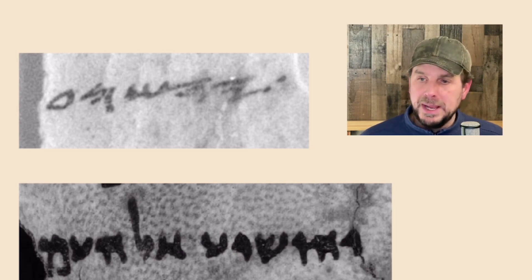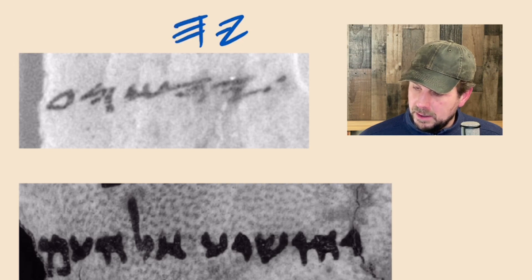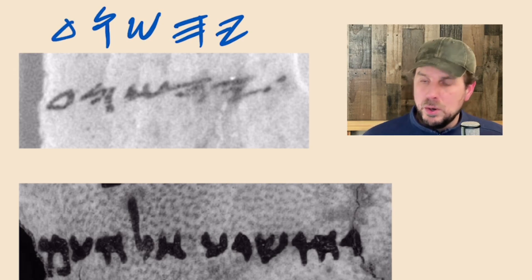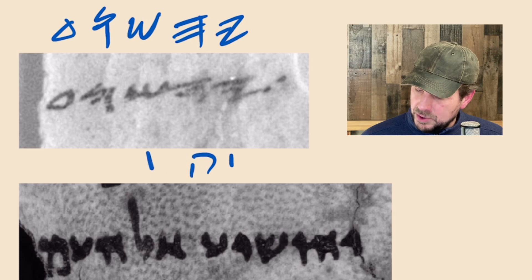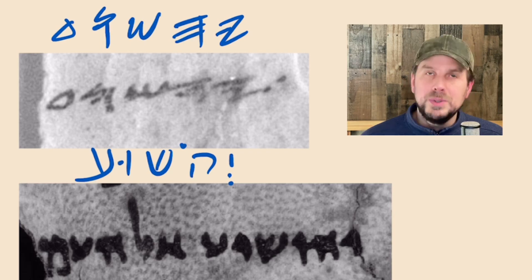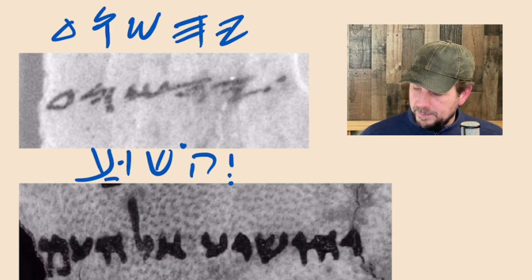This was not written in Qumran — it was written elsewhere and then taken to Qumran at some point during the span of that community. As you can see, it's written in Paleo-Hebrew, and the letters here are Yod, He, Shin, Vav, Ayin. It spells Yehoshua. If we were to write that in Aramaic script, it would be Yod, He, Shin, Vav, Ayin, and the vowels would be a Sheva, Ha, Cholem, and then a U sound for the Vav, and then what we call a Furtive Patach — Yehoshua.